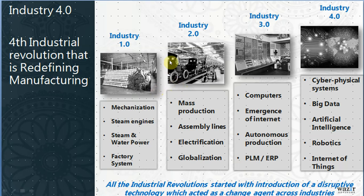We started industrialization hundreds or thousands of years back. In Industry 1.0, it was the time of mechanization — steam engines, water power, and the factory system. Then came Industry 2.0, with electrification as a big development, mass production, and assembly line production. Suddenly came a new big development: the computer, starting Industry 3.0.